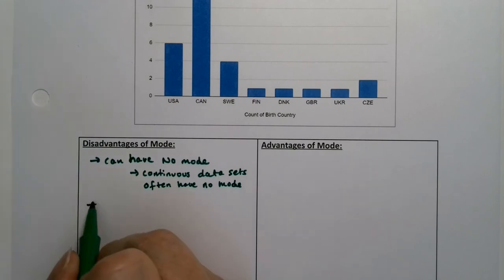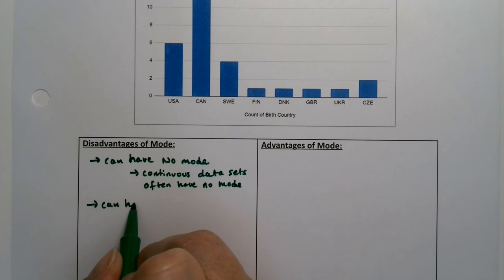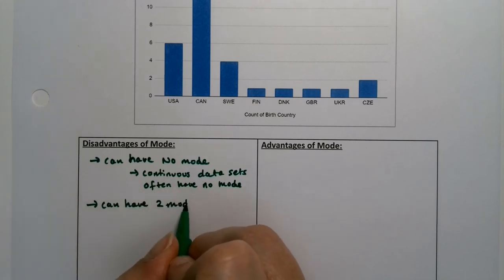But you can also have two modes, as we saw up above. Three modes, four modes. Technically, all of those things are possible. So you'd have two modes, three modes, four modes.